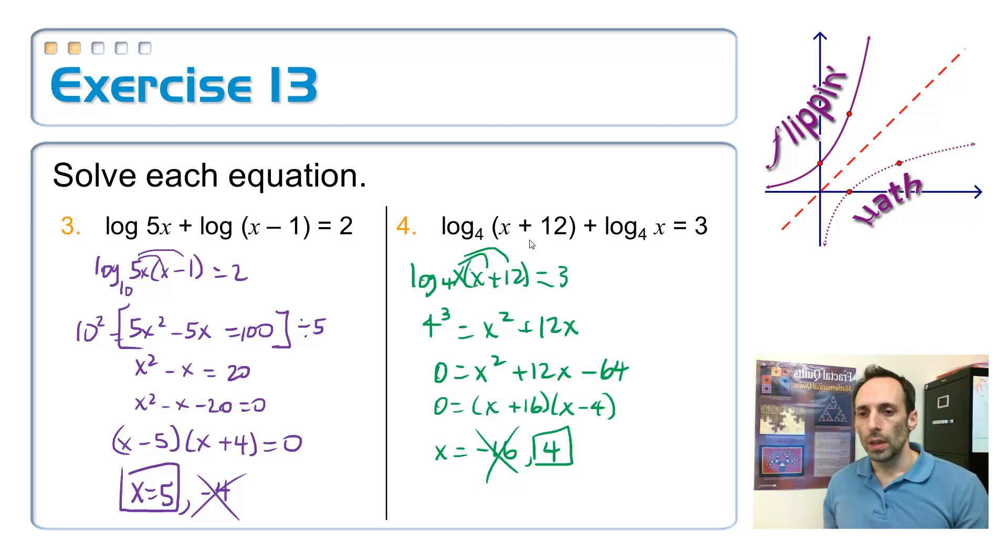Okay, the last two. The last two, you have to use the product property to simplify these first, to condense them down. So whenever you use the product property here with the 5x and the x minus 1 to make it into a simpler equation, which is one logarithm, remember that the base here, the common log base is 10 whenever they don't write it. So 10 to the second power, we got 100, and then I went ahead and distributed the 5x of the parentheses. It is quadratic, so you factor the quadratic, and we have two answers, a 5 and a negative 4. The 5 is good, but the negative 4 makes both of those things negative. It's undefined, throw it away.